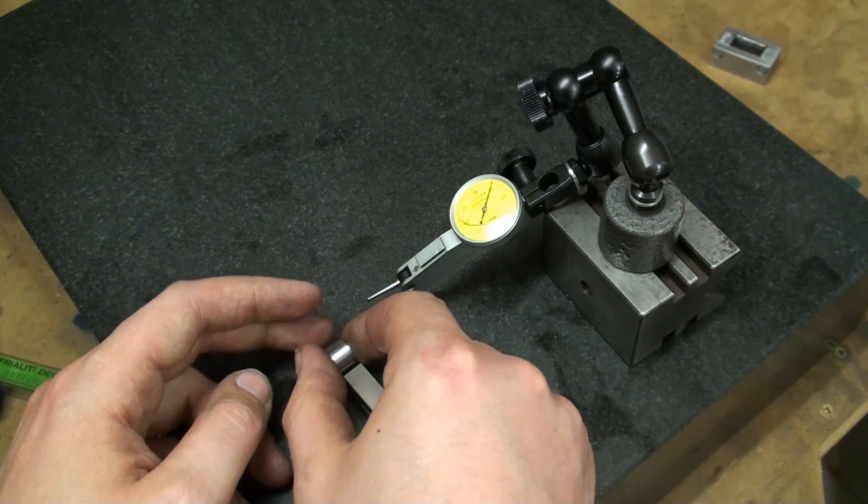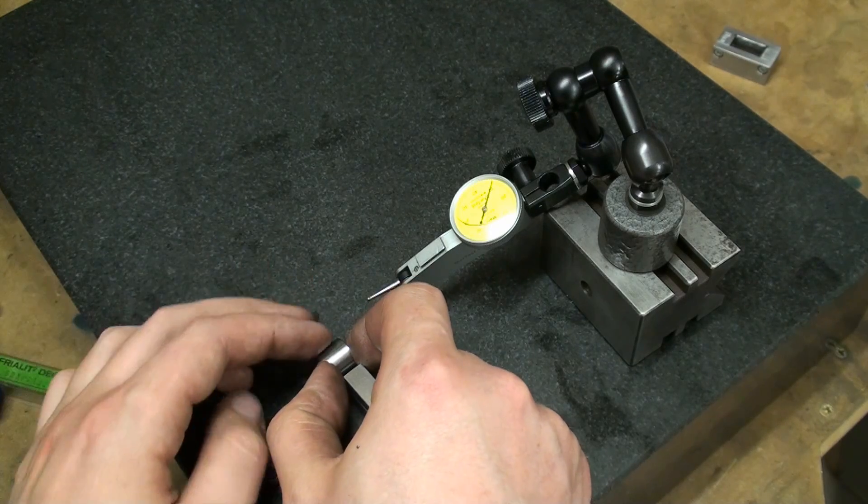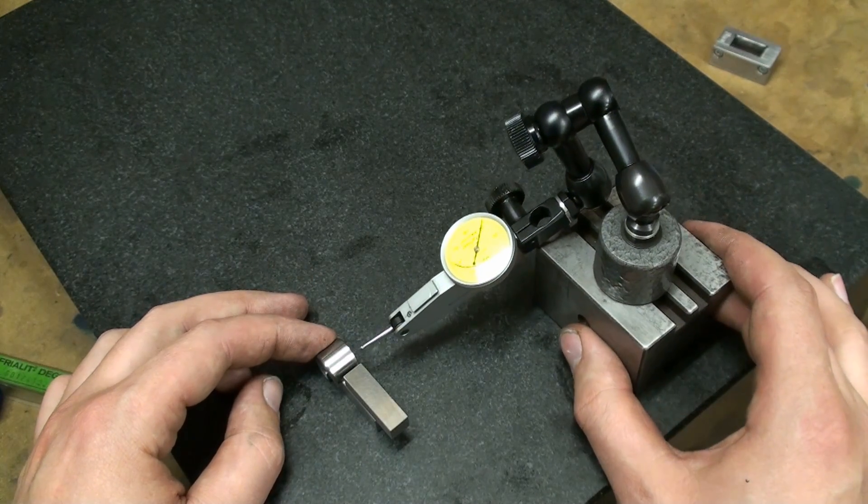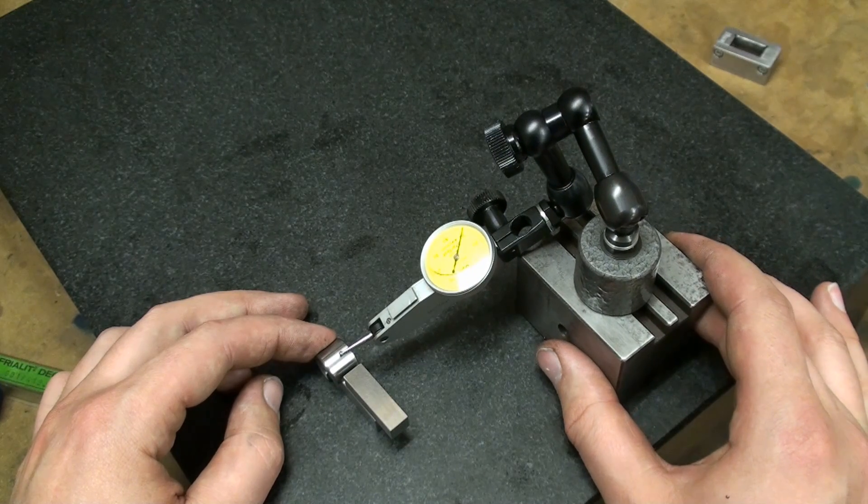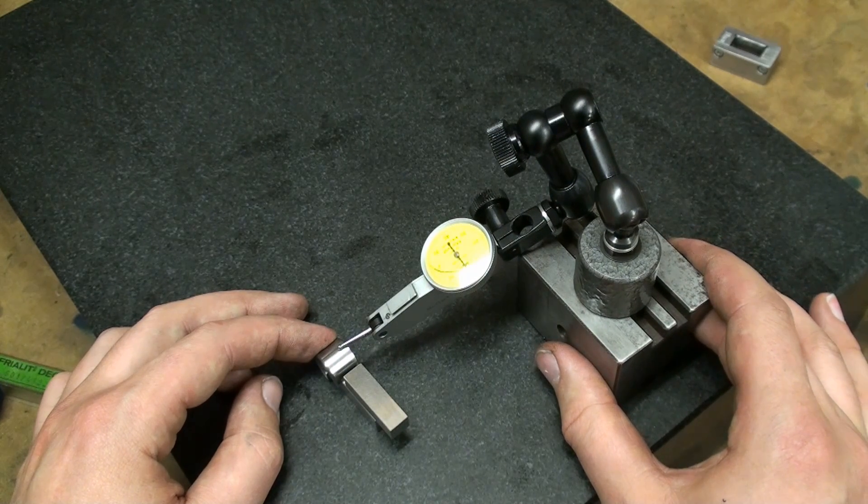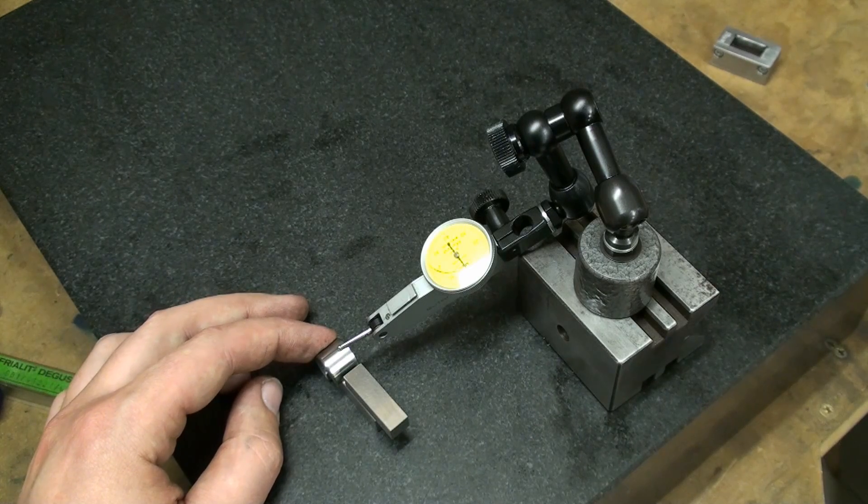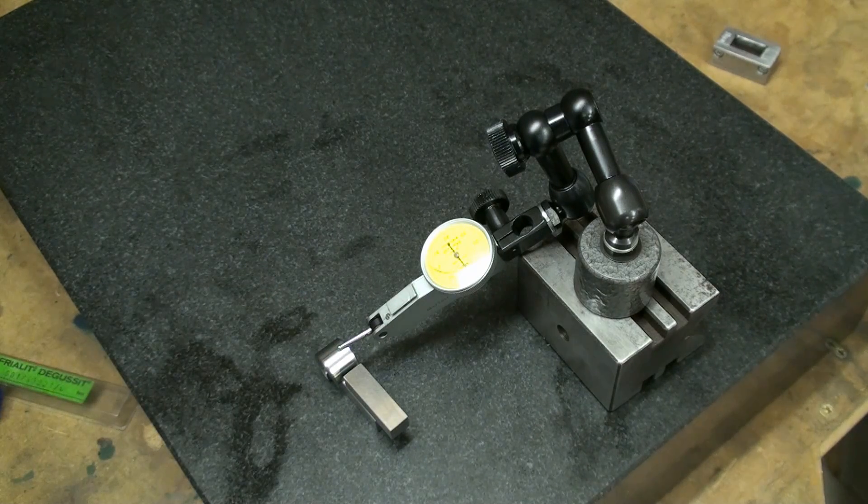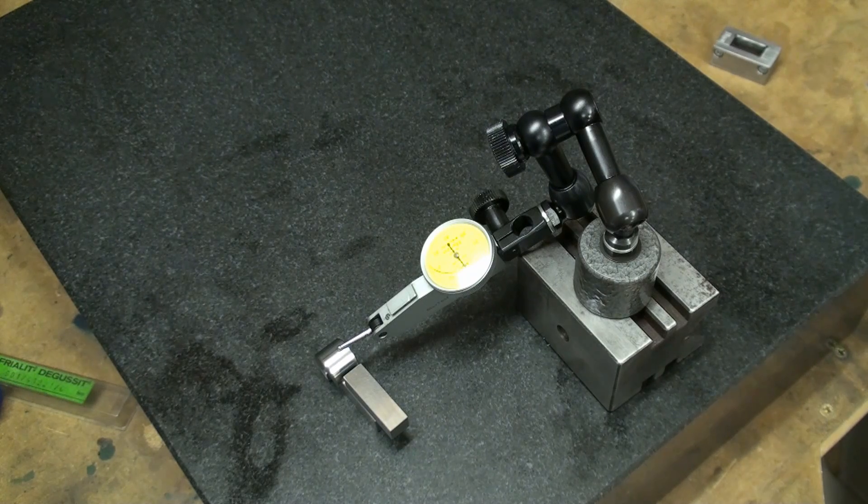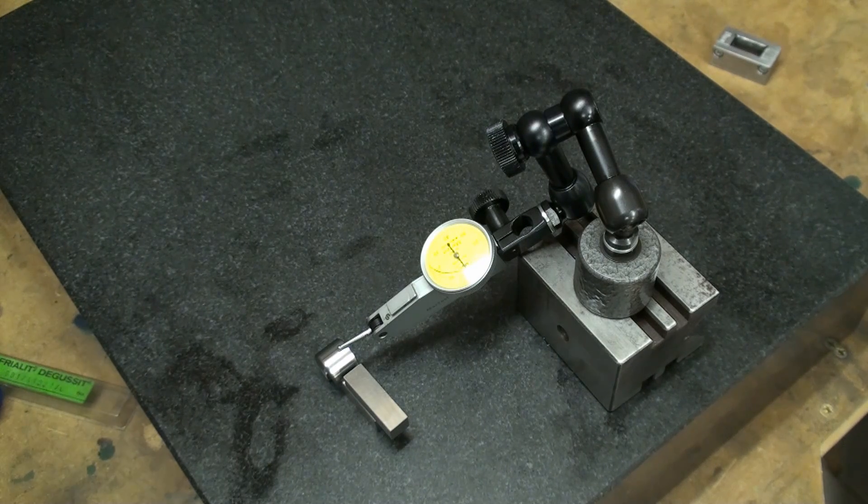Now for the second side. Of course I already did this and I know what's the outcome. This is one hundredths of a millimeter off. And one hundredths of a millimeter is really not that much. It's half a thou or five ten thousandths of an inch.